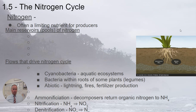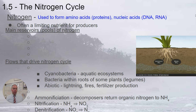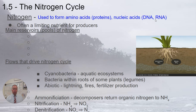The next biogeochemical cycle we'll talk about is the nitrogen cycle. Nitrogen is really important to living organisms. It is a key component of amino acids, which are linked together to form proteins that make up living things. Nucleic acids like DNA and RNA contain nitrogen as well. Nitrogen is also an important component in fertilizers, and especially in terrestrial ecosystems, nitrogen is a limiting nutrient — the amount of nitrogen in soil is often limited, and that limits the growth of producers.